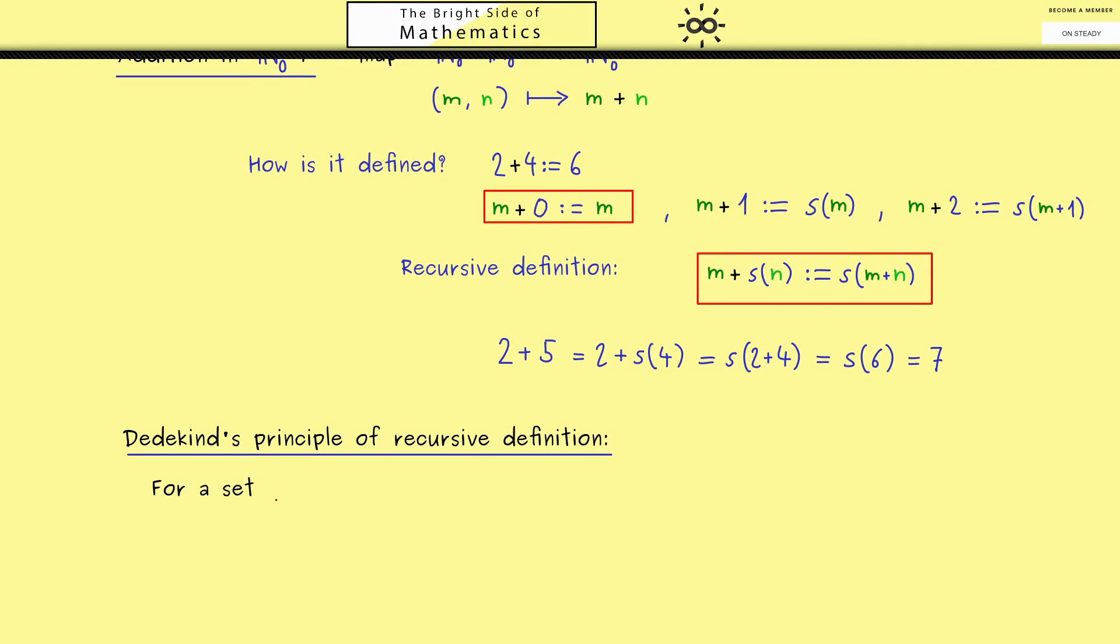If we have any set capital A and a chosen element a and a map h from A into A, then there is a unique definition of what it means applying h as often as you want to a. In other words, we can give meaning to the progression a, h(a), h(h(a)), and so on.